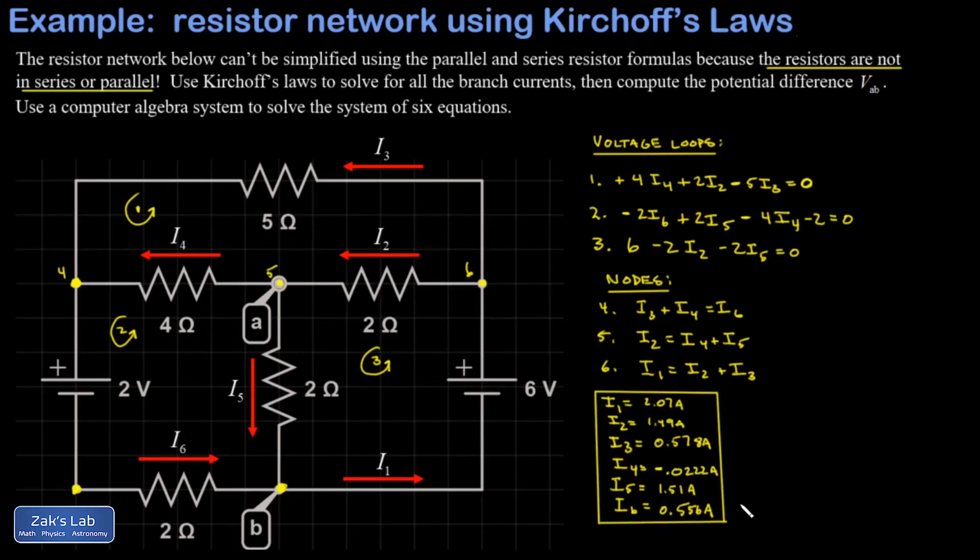Rounding all these to three sig figs. So we've got every branch current in the circuit. Note that one of these is negative. I4 came out negative. And all that means is that the actual direction of I4 is opposite to the way it was drawn.